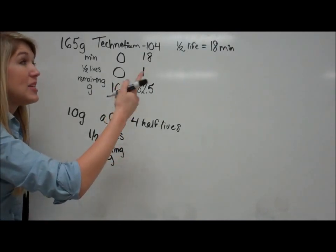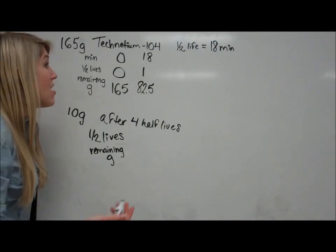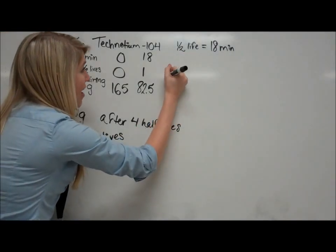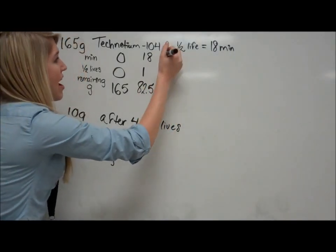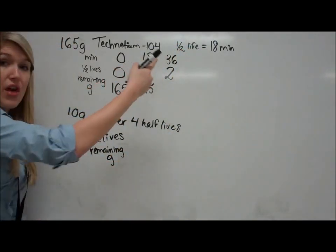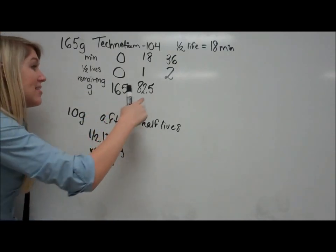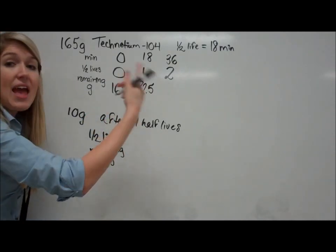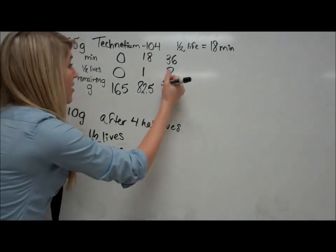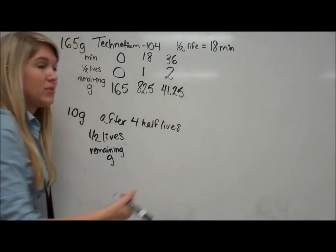We have to go up to 90 minutes because they want to know how much is left after 90 minutes. So now for our second half-life, we've now had 36 minutes pass. We added another 18 minutes on. So after 36 minutes have passed, now this number is going to get halved again. So now you'll have 41.25 grams left.